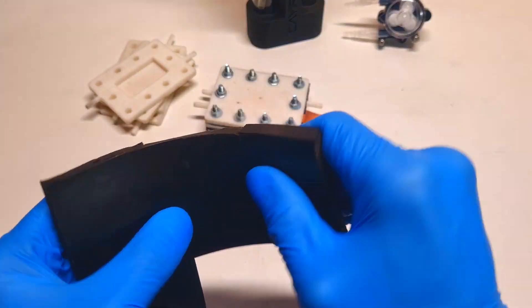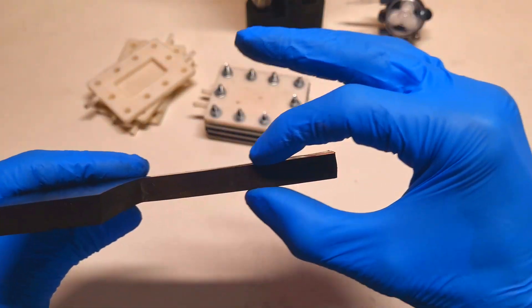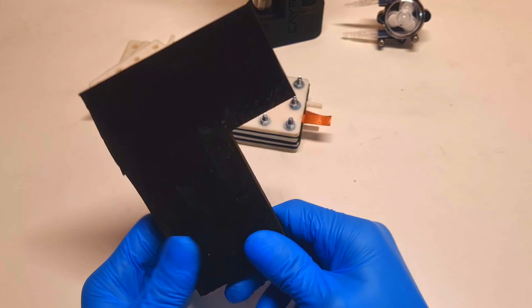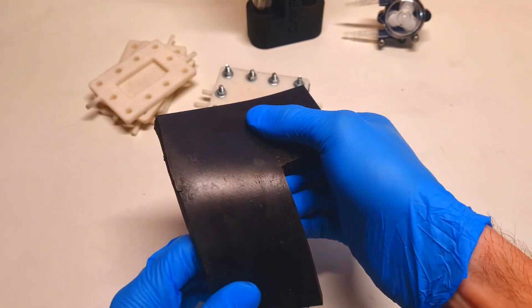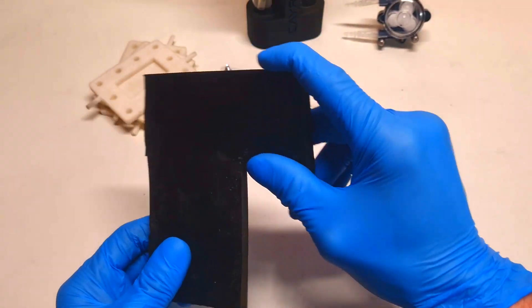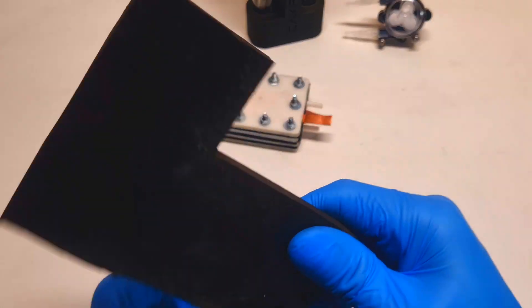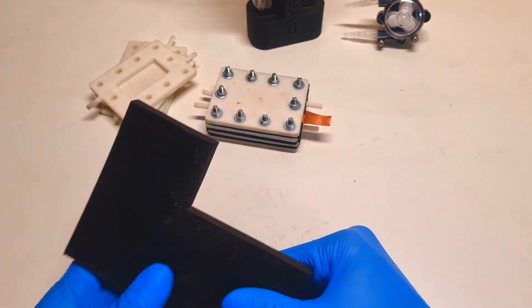Here I have neoprene rubber with a thickness of 1cm. This is really good to make cell housing in any shape and any size. From this I already made 2 pieces of my housing.